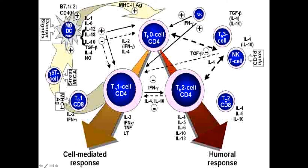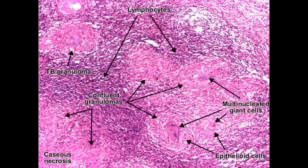Gamma interferon acts somewhat like a chemotactic agent, calling monocytes from the circulation and helping them differentiate into macrophages. The closer these monocytes get to the affected area where the Th1 cells are found, the more differentiated they become. Eventually the macrophages become specialized — their nucleus and the whole cell take on a shape similar to an epithelial cell — and they are therefore called epithelioid cells.